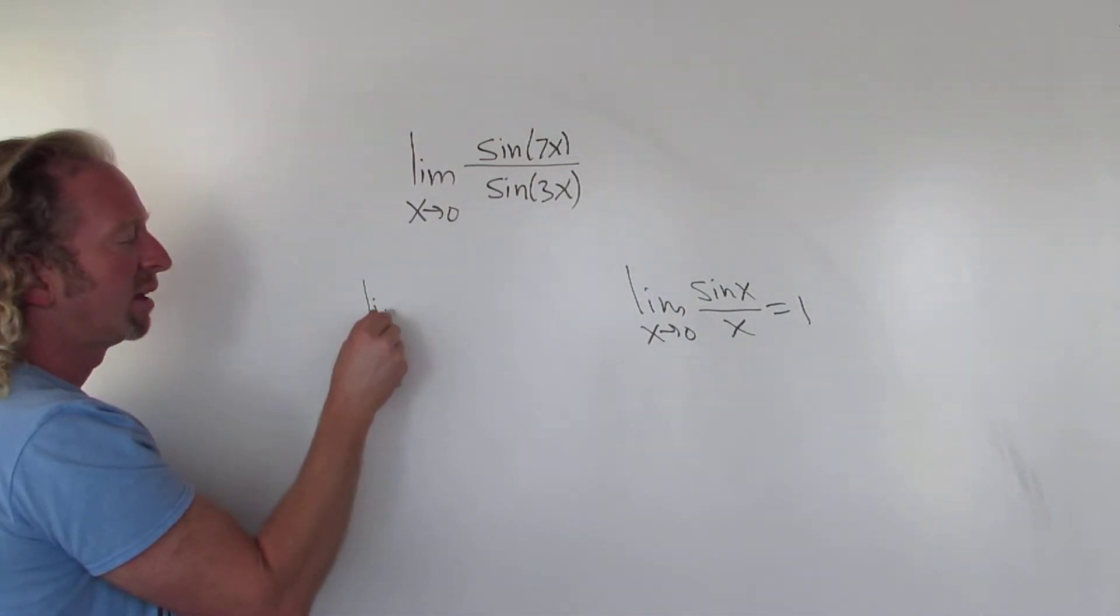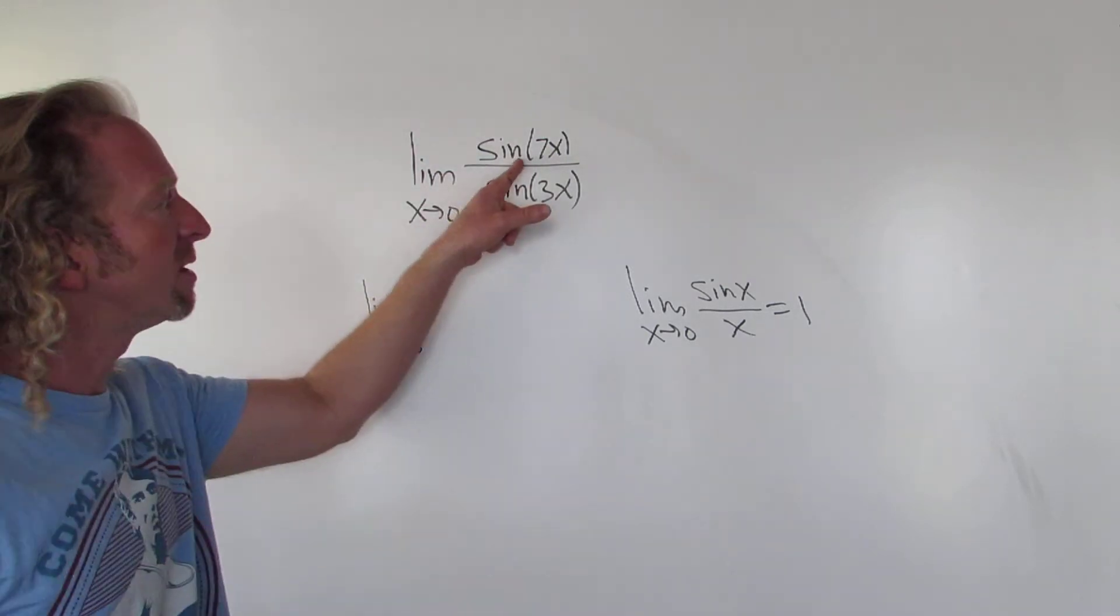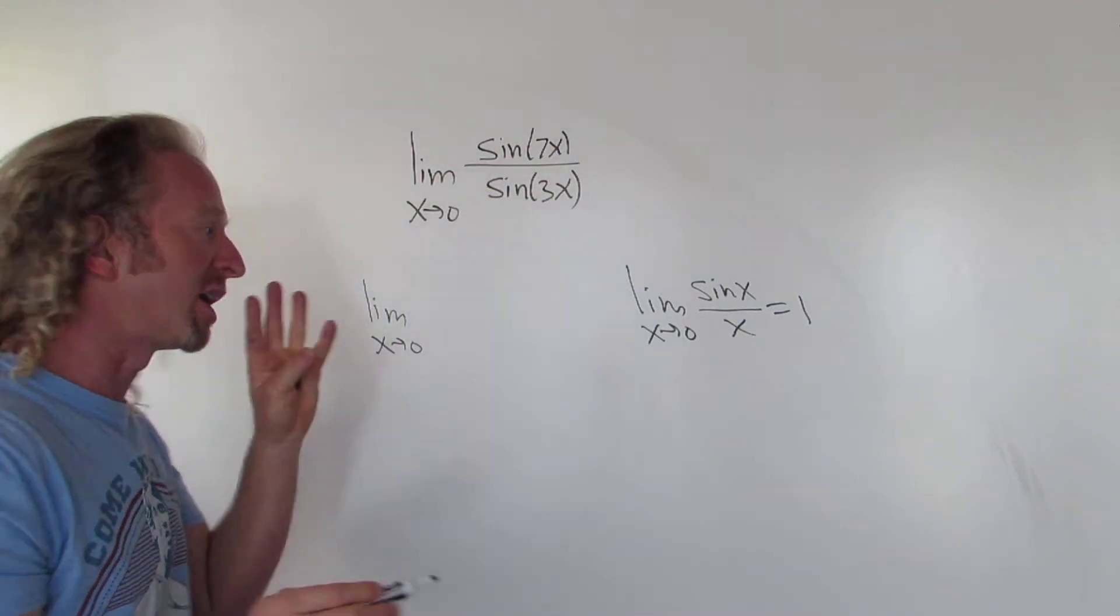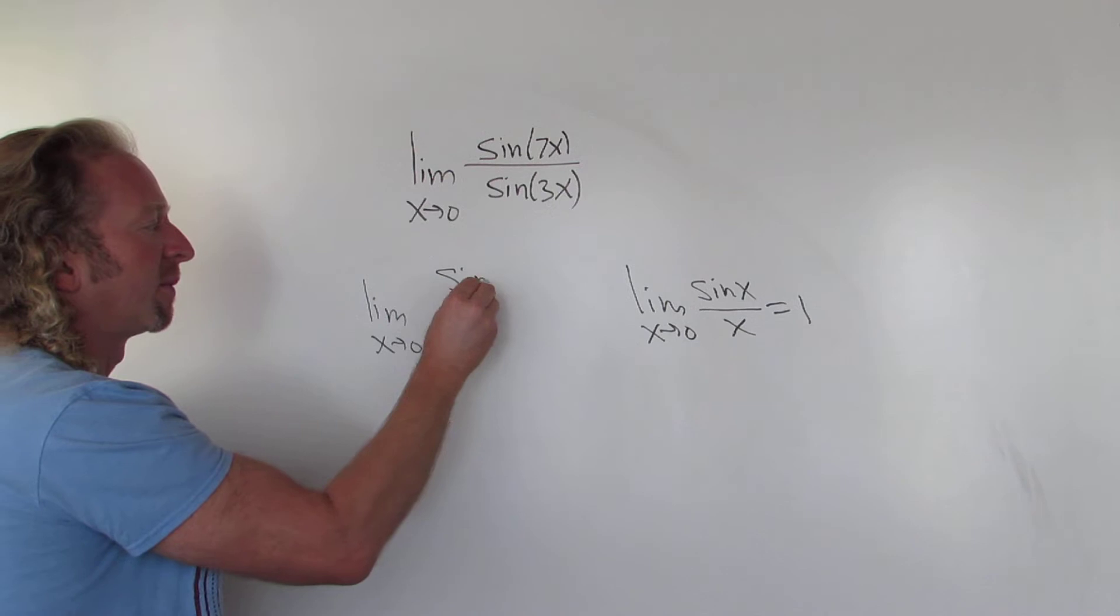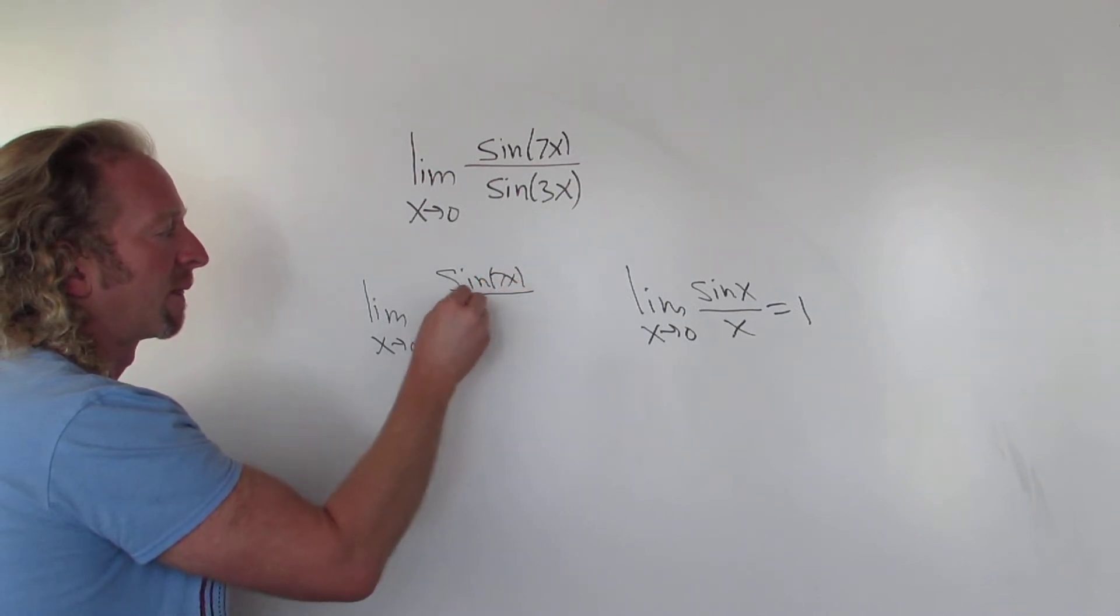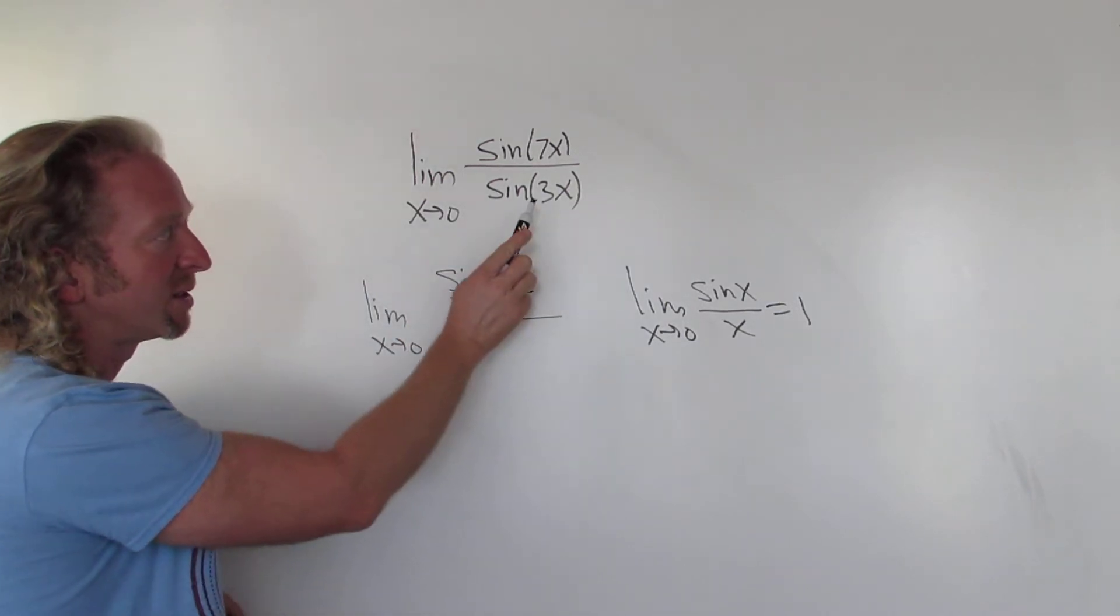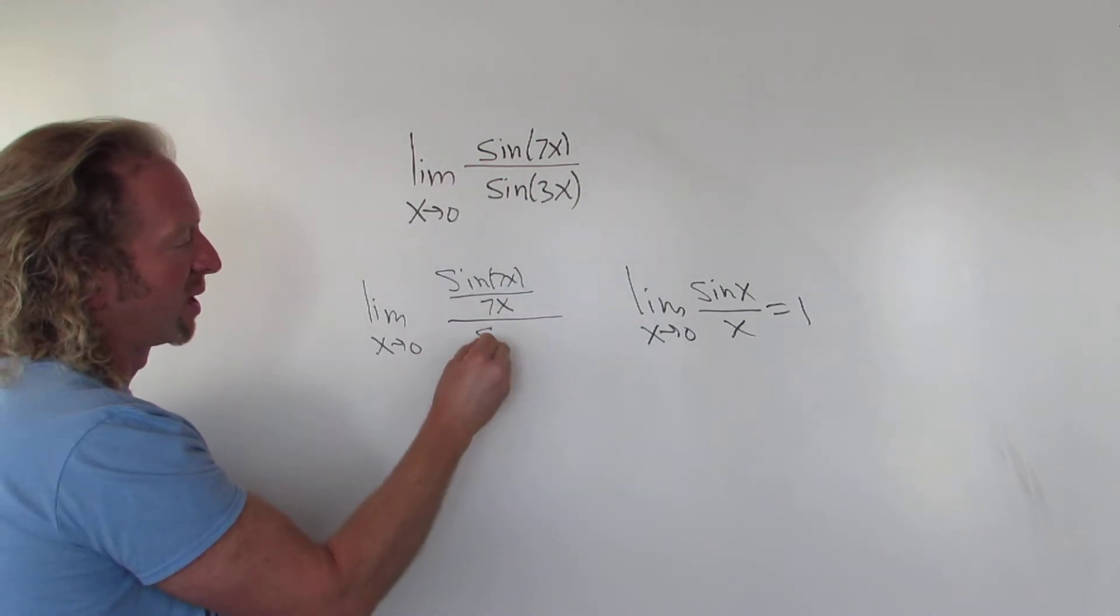So we write down the limit again. We want this to be sine 7x over 7x, so we just write it down. And on the bottom, we want this to be sine 3x over 3x, so we write it down.